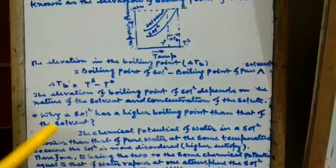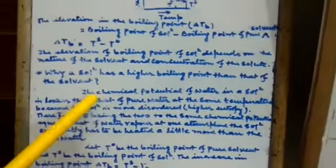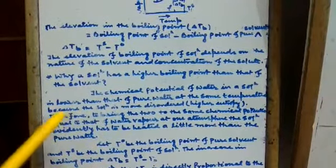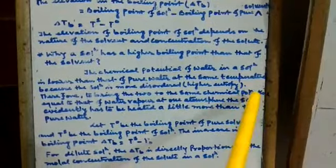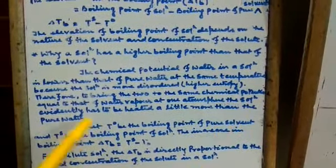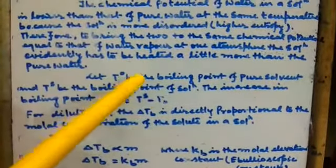Now, question is, why a solution has a higher boiling point than that of solvent? The chemical potential of water in a solution is lower than that of pure water at the same temperature, because the solution is more disordered, that is, have higher entropy. Therefore, to bring the same chemical potential equal to that of water vapor at one atmospheric pressure, the solution evidently has to be heated a little more than the pure water.